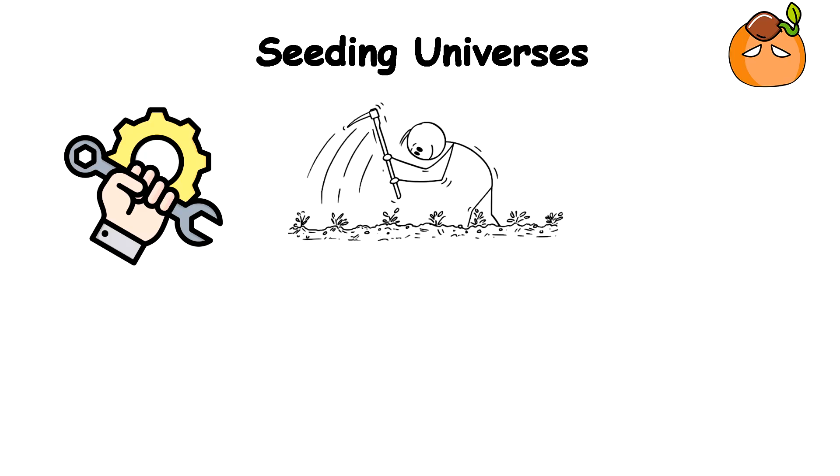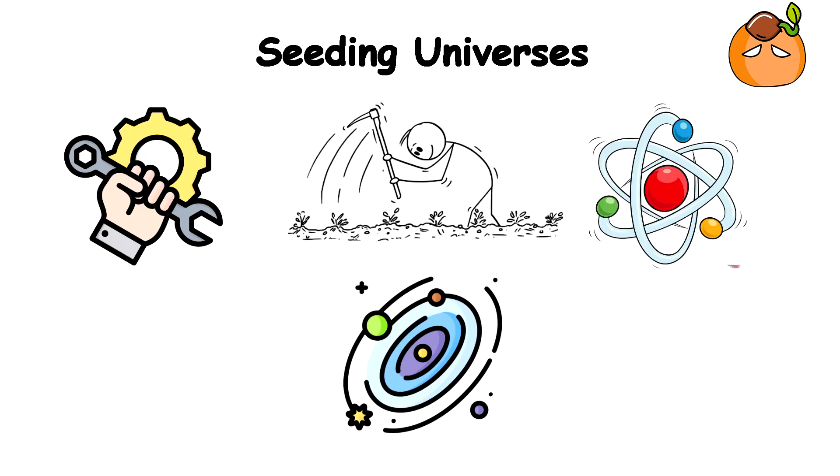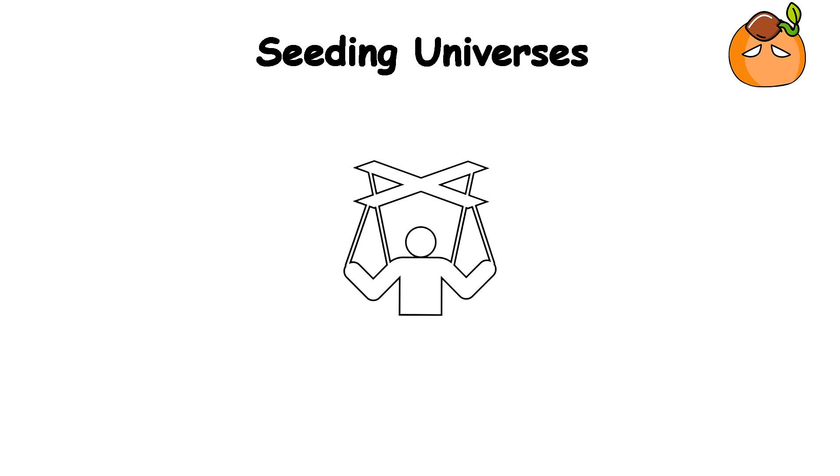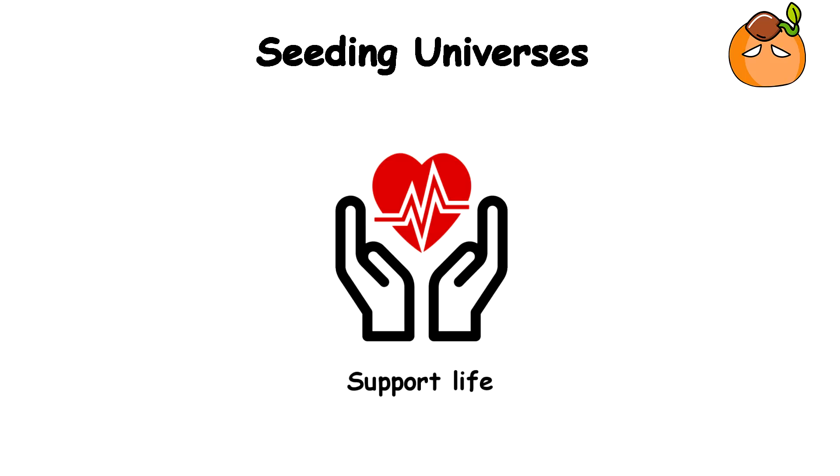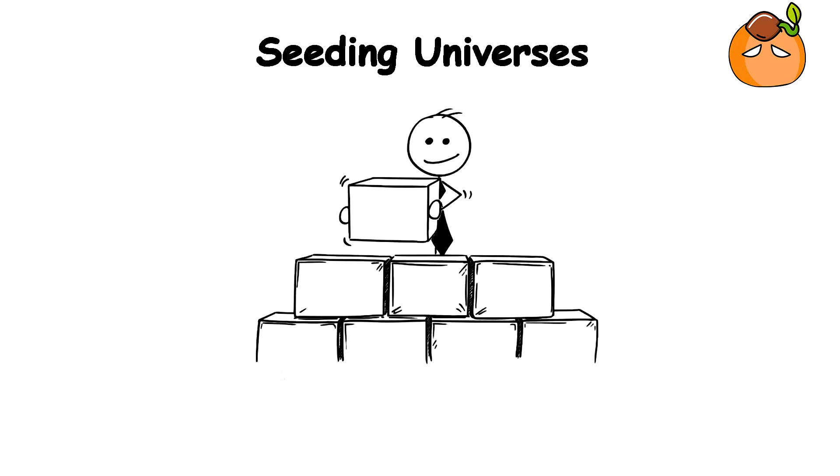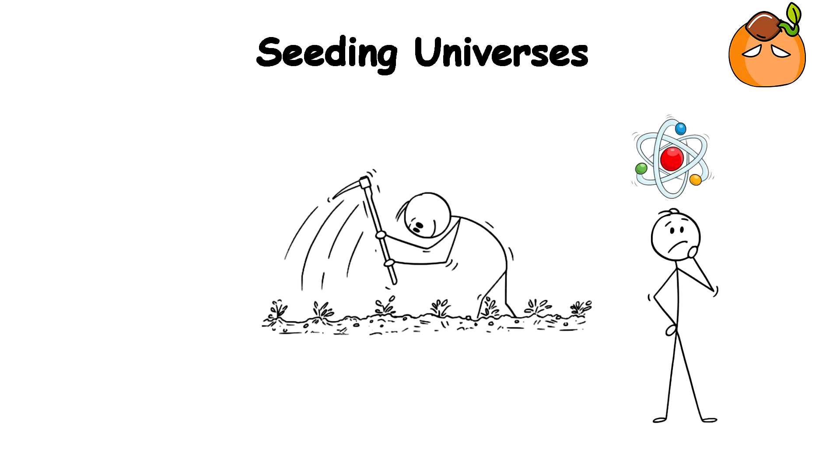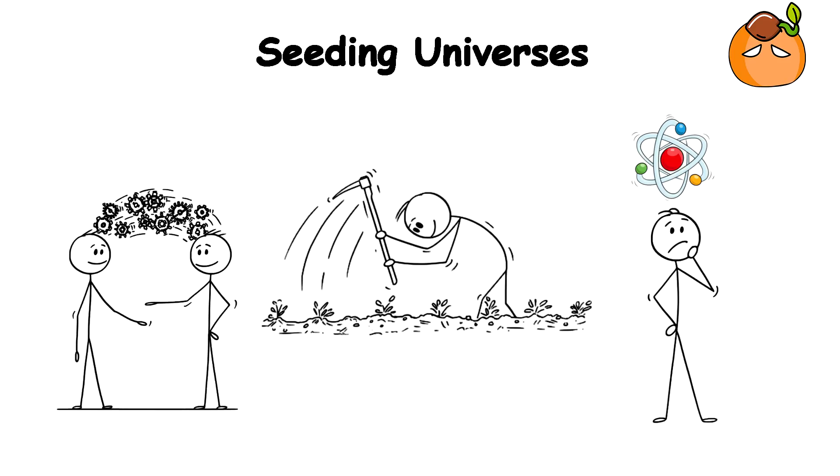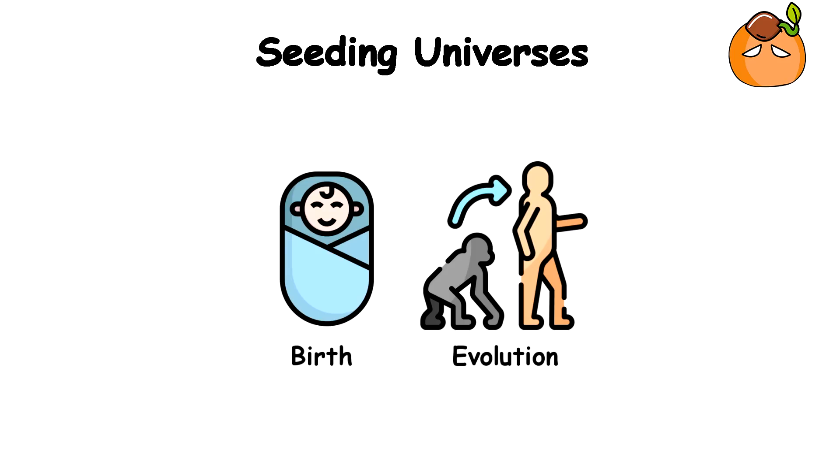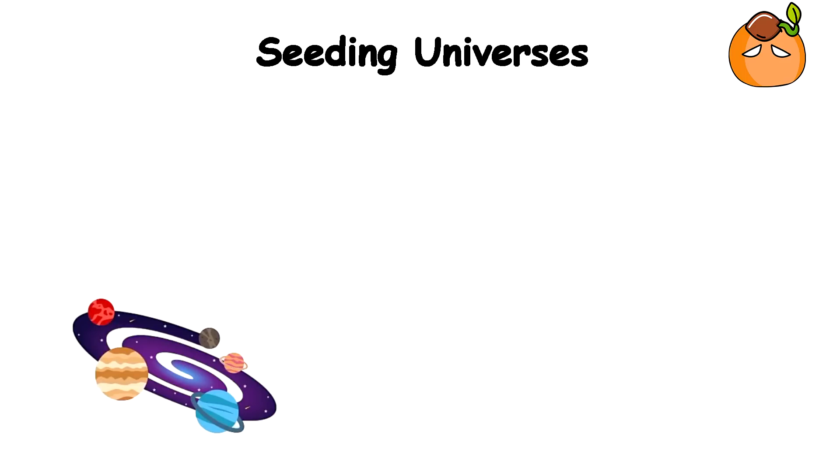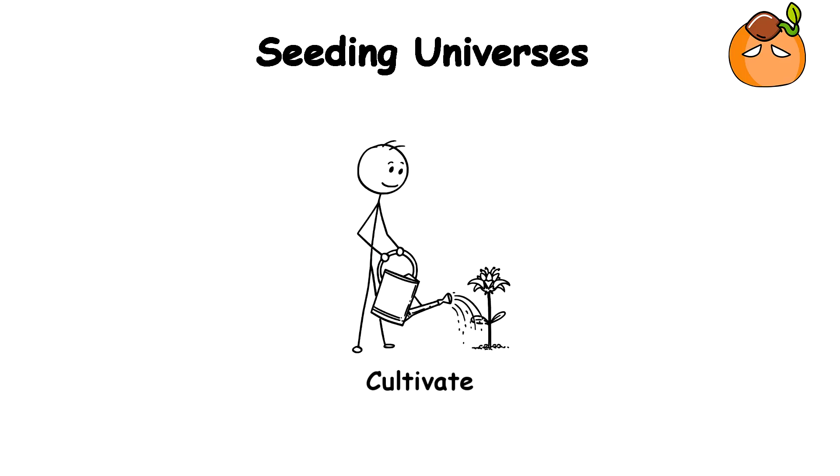Perhaps they could tweak the fundamental constants of physics within the new universe, influencing things like gravity's strength or certain particles' existence. This control over reality allows them to create universes designed to support life, potentially seeding them with the building blocks necessary for biological evolution. The seeders may be driven by scientific curiosity, a desire to expand their knowledge of the multiverse, and witness the birth and evolution of new realities. They may search for a specific type of universe with characteristics that perfectly suit their needs or a specific life they hope to cultivate.